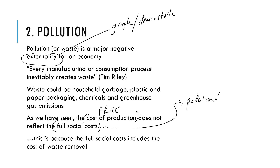The full social cost includes the cost of waste removal and fixing the environment. If we include all the full social costs, the good should have a higher price and a lower quantity. That goes back to the externality graphs — there's a link in the top right to check out if that's a bit unfamiliar.